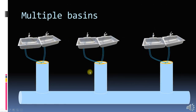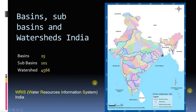Similarly, you can have multiple wash basins representing multiple watersheds which are draining to one large stream or lake. In India, there are 25 drainage basins, 101 sub-basins, and 4566 watersheds as per the Central Water Commission India report.